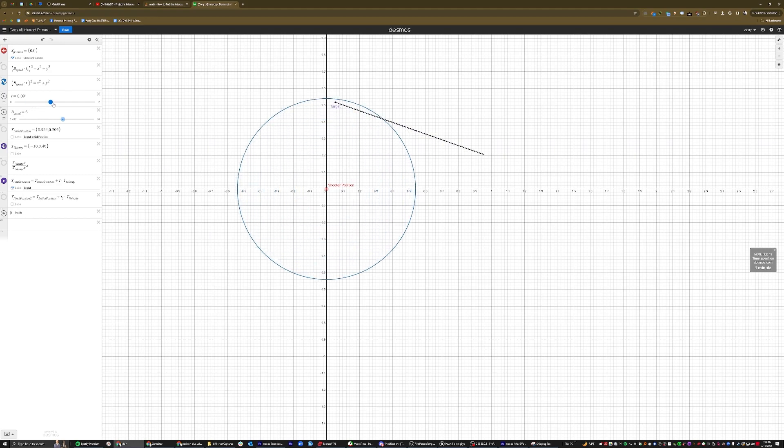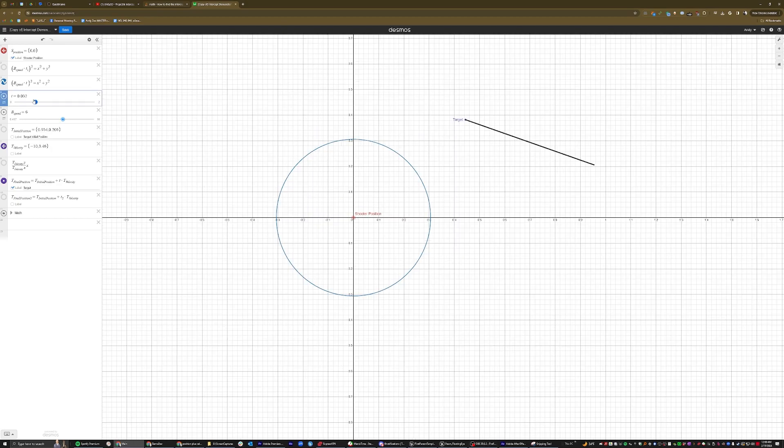And that's what's illustrated here in this graph made using Desmos. You can see that as time passes by, the target and the bullet's possible positions overlap. And those are basically the positions that we are trying to solve for.